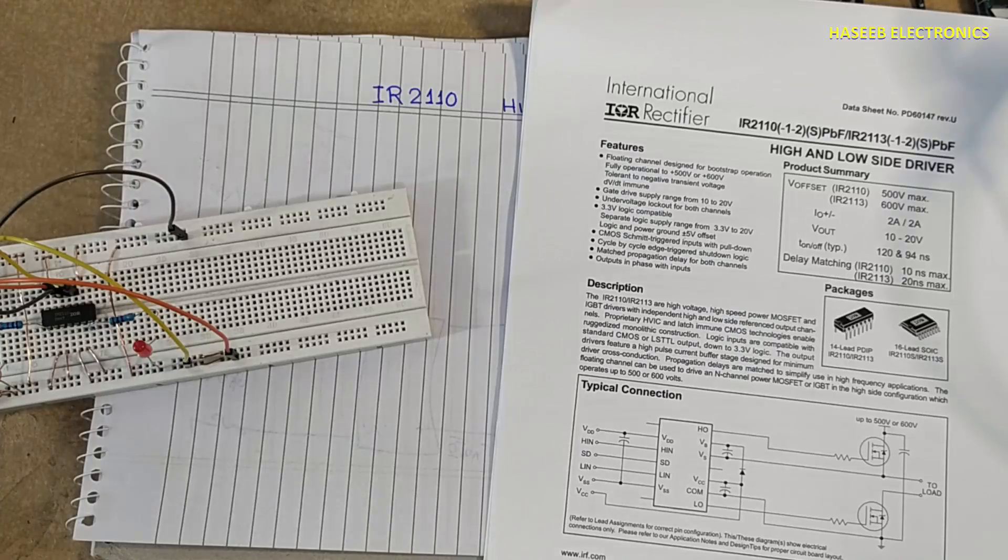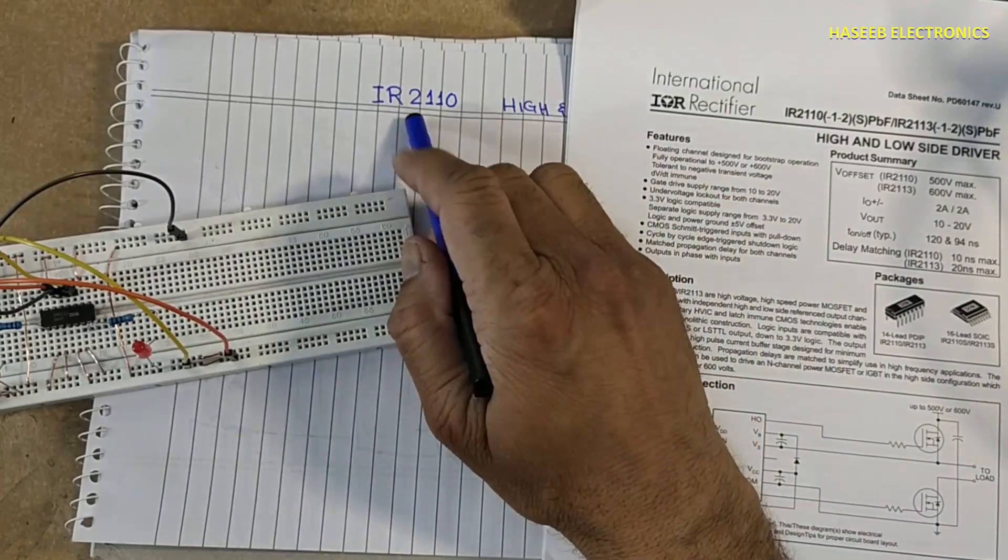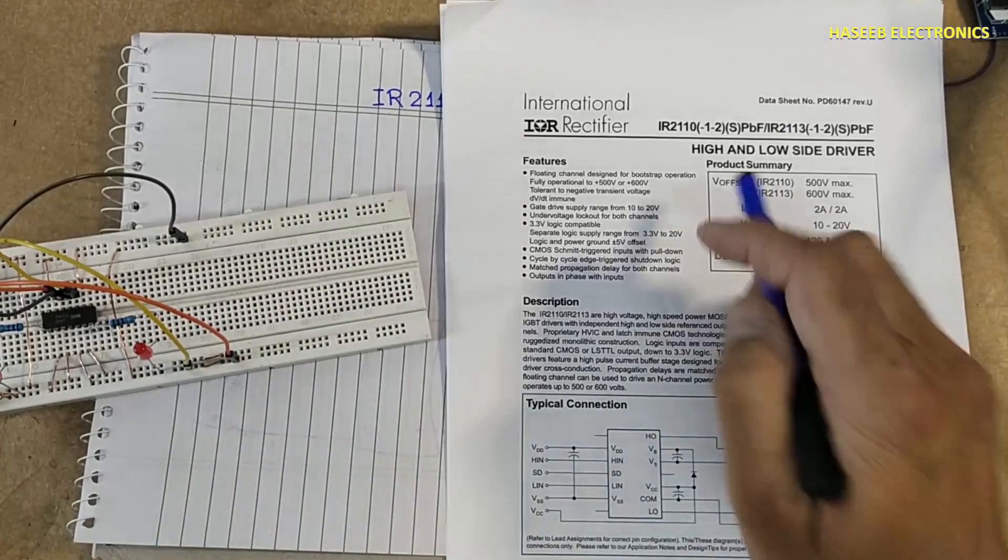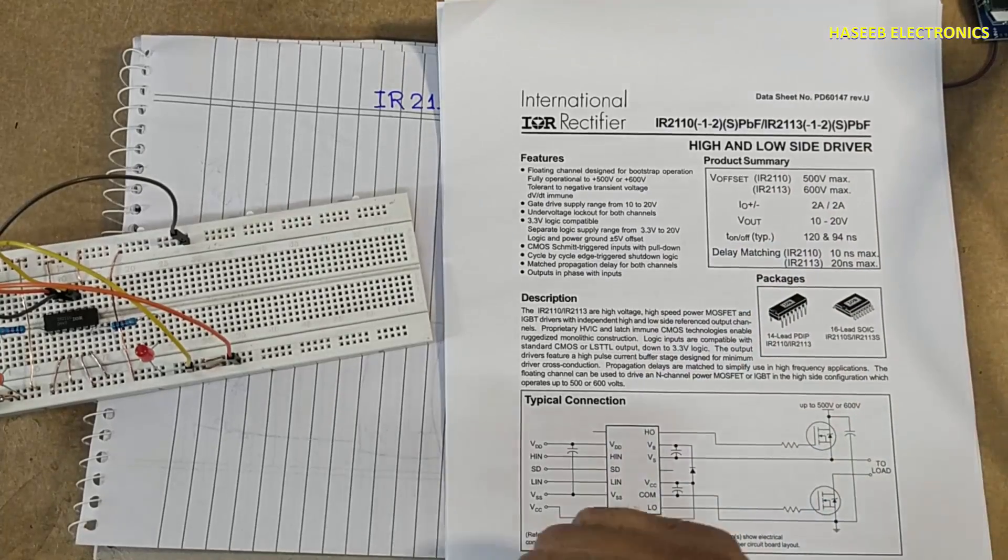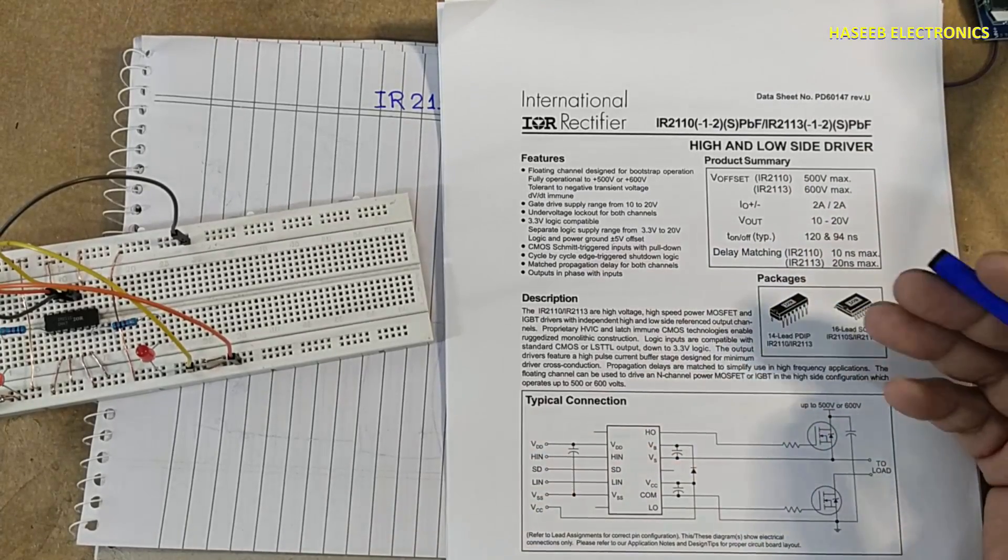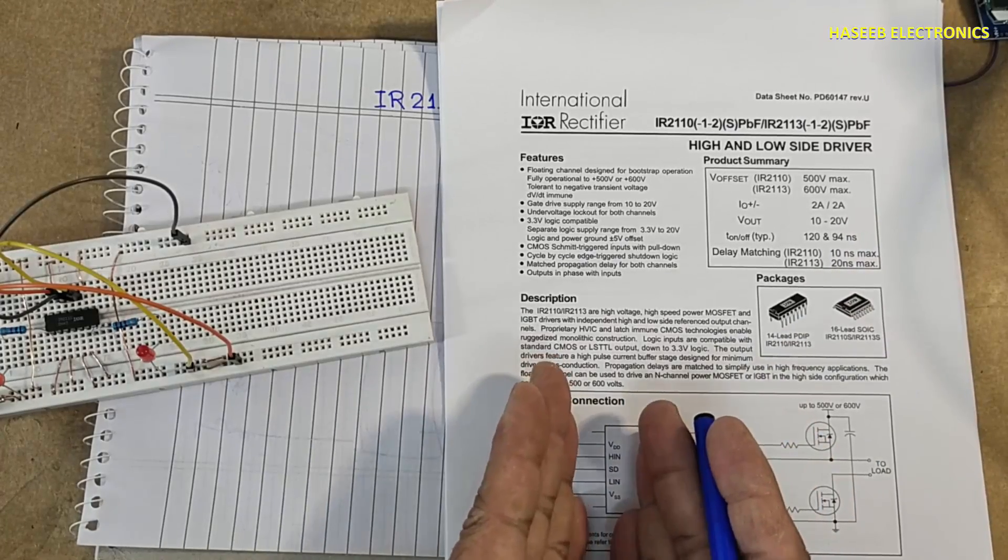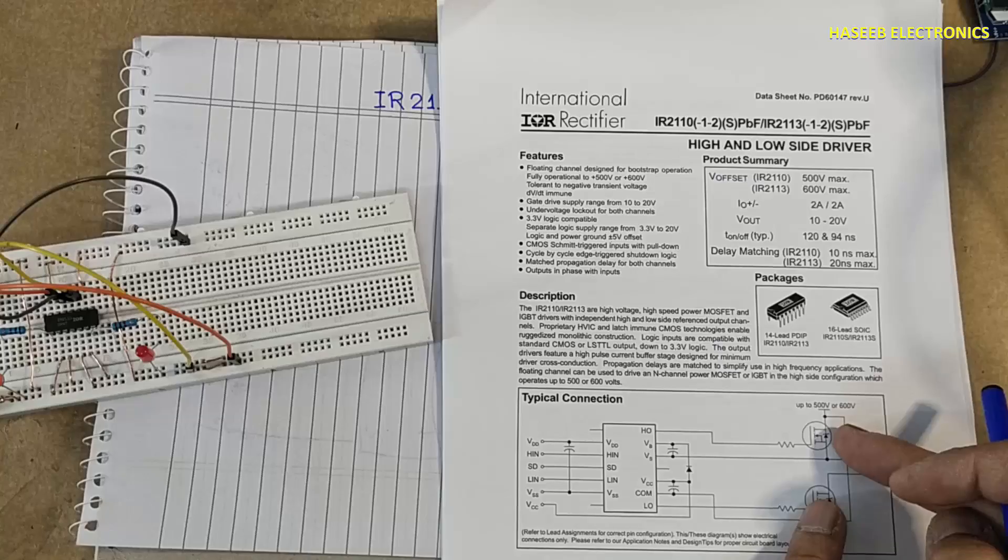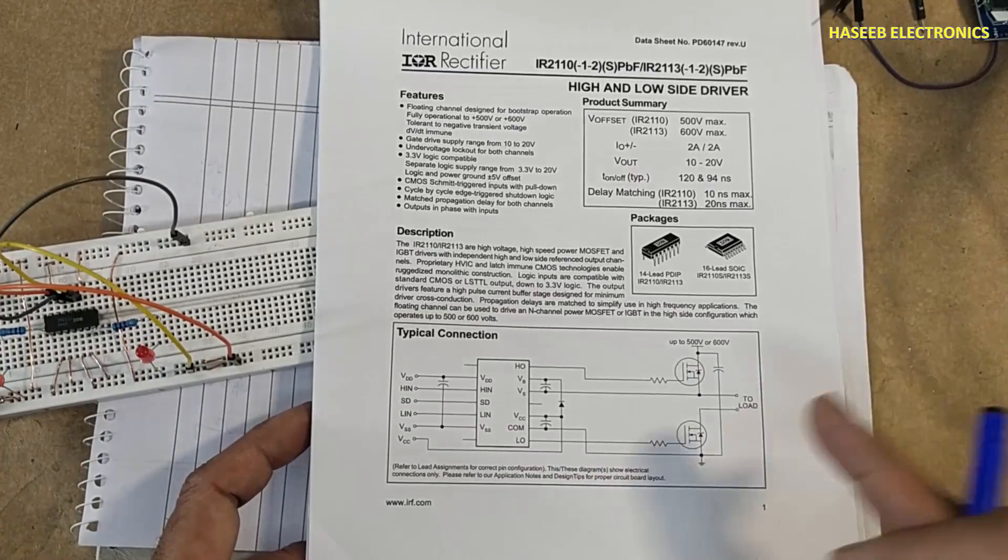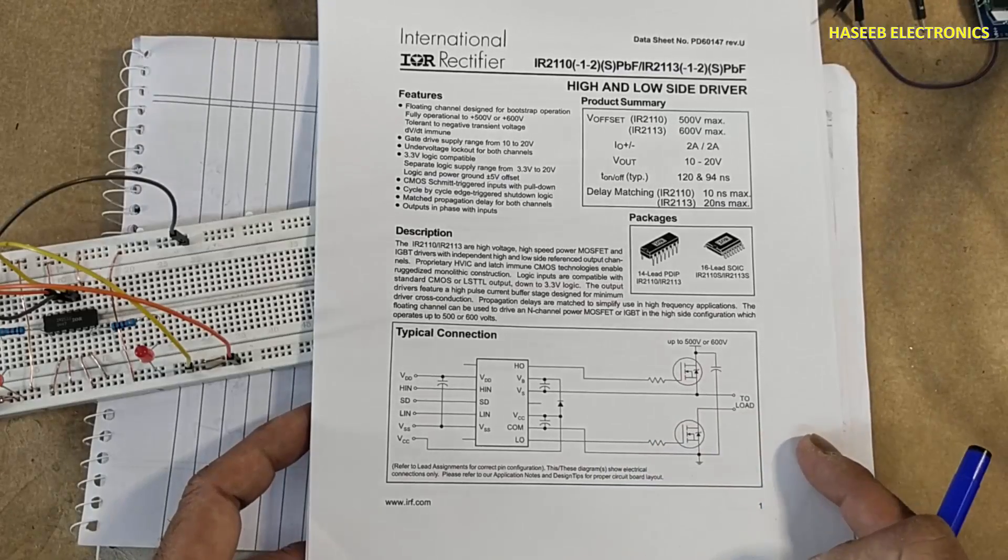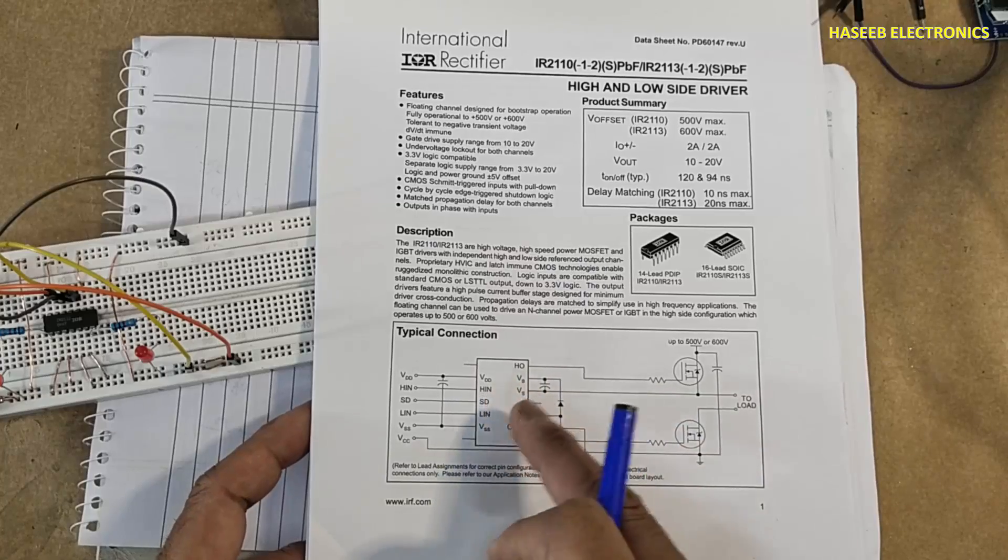Assalamualaikum warahmatullahi wabarakatuh friends, welcome back to my channel. IR2110 is a high and low side driver for MOSFETs. Most of the time it is used in H-bridge topology. Two ICs are used - one IC to drive two MOSFETs, the other IC is used for the other two MOSFETs, so four MOSFETs or IGBTs are controlled by a pair of these.